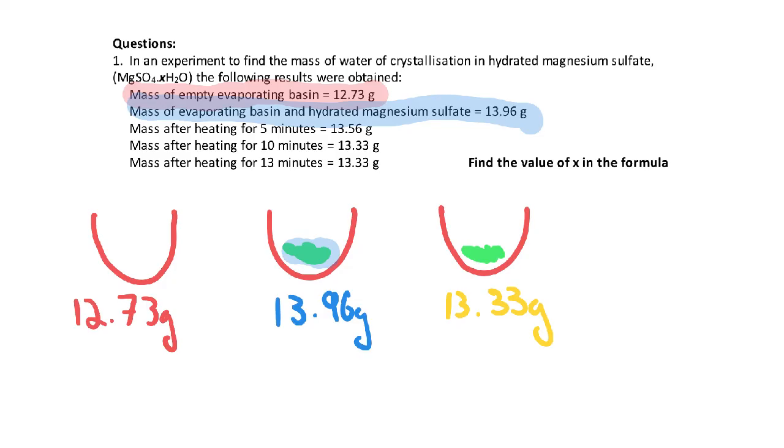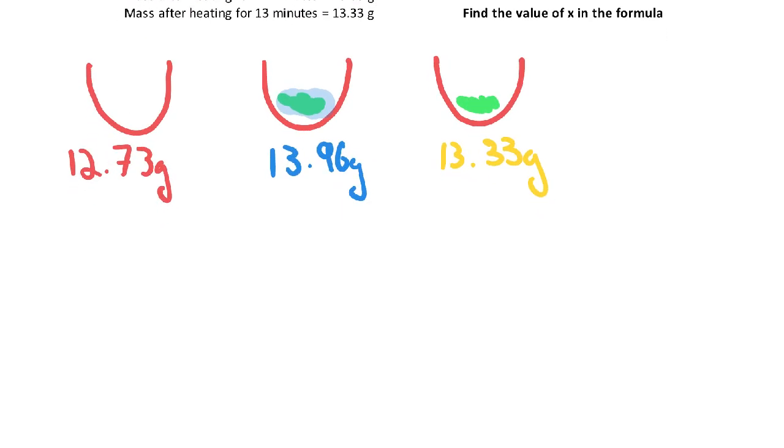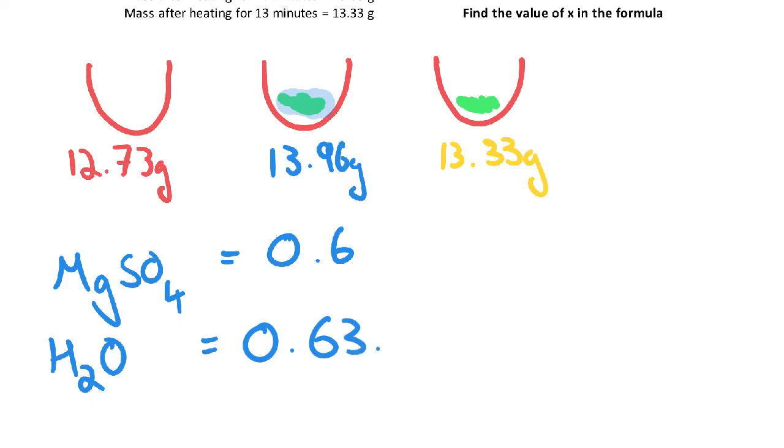So that then gives me a mass of my magnesium sulfate equal to 0.6, and it gives me a mass of water as a mass of 0.63 grams. So I want to now find the moles of each of these, and once I find the moles of magnesium sulfate and the moles of water, I find the ratio of those two to get me my final formula.